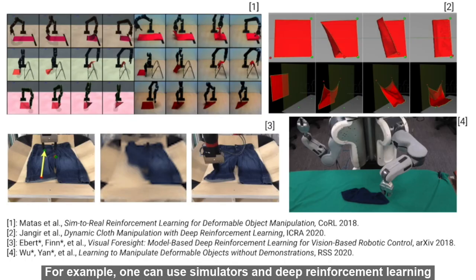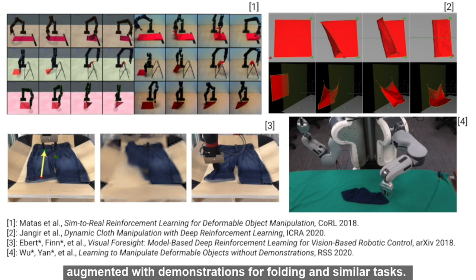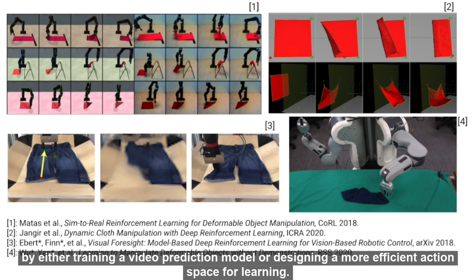For example, one can use simulators and deep reinforcement learning augmented with demonstration for folding and similar tasks. Other techniques avoid use of demonstration by either training a video prediction model or designing a more efficient action space for learning.